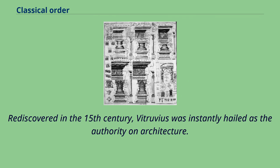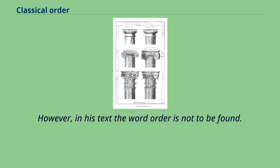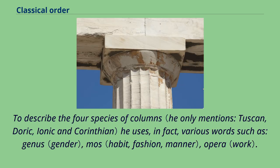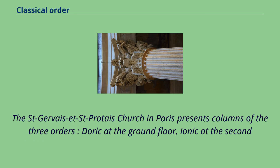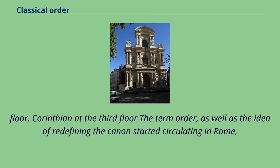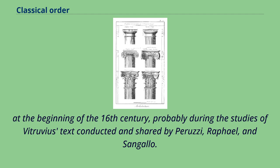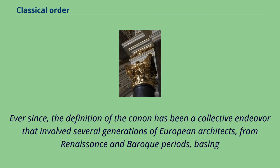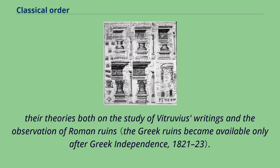Rediscovered in the 15th century, Vitruvius was instantly hailed as the authority on architecture. However, in his text the word 'order' is not to be found — to describe the four species of columns he uses various words such as genus, mos, and opera. The term 'order,' as well as the idea of redefining the canon, started circulating in Rome at the beginning of the 16th century, probably during the studies of Vitruvius's text conducted by Peruzzi, Raphael, and Sangallo. Ever since, the definition of the canon has been a collective endeavor involving several generations of European architects from Renaissance and Baroque periods, basing their theories on both Vitruvius's writings and the observation of Roman ruins.